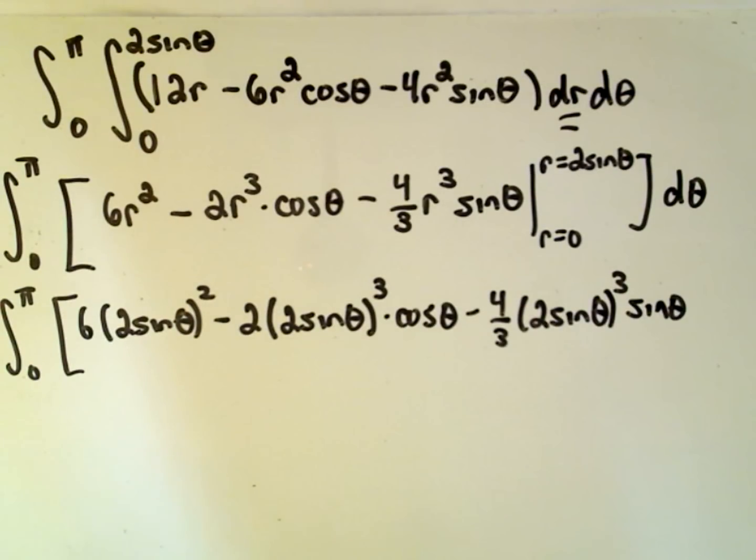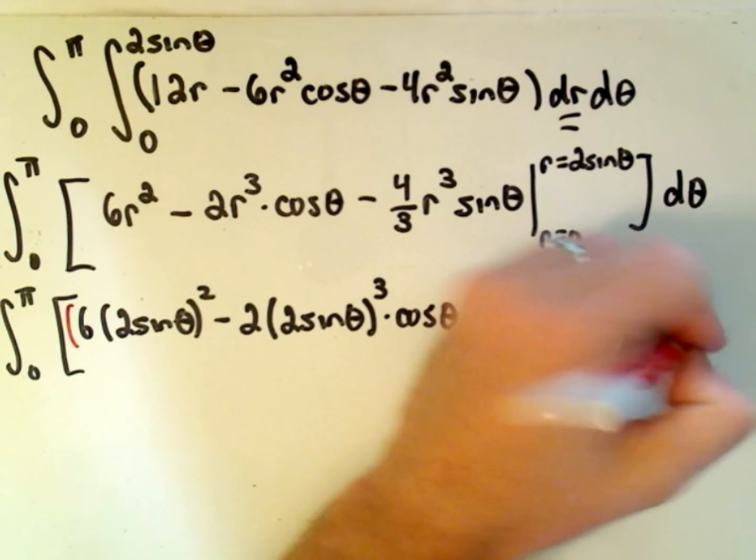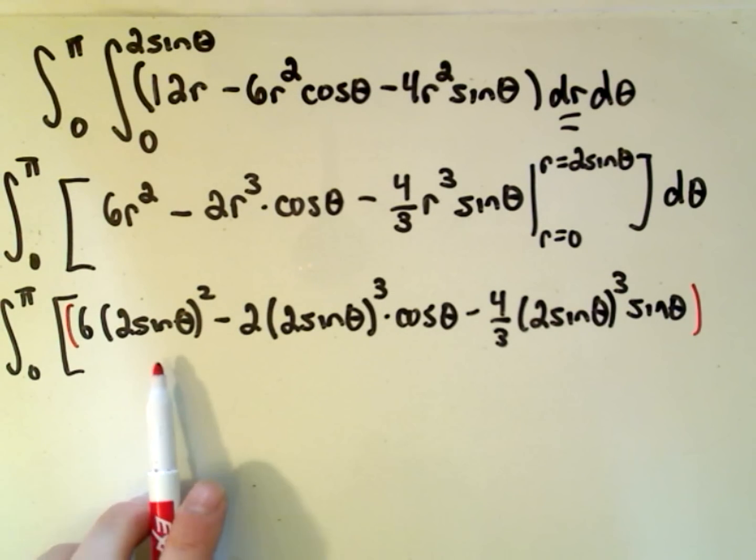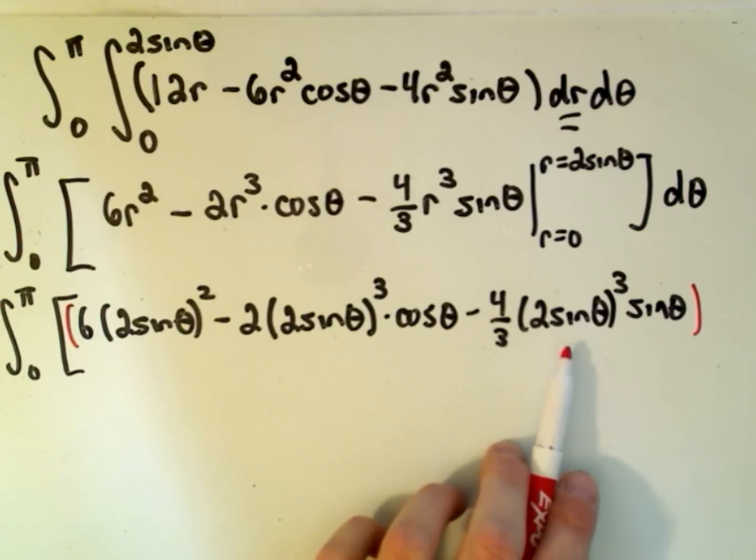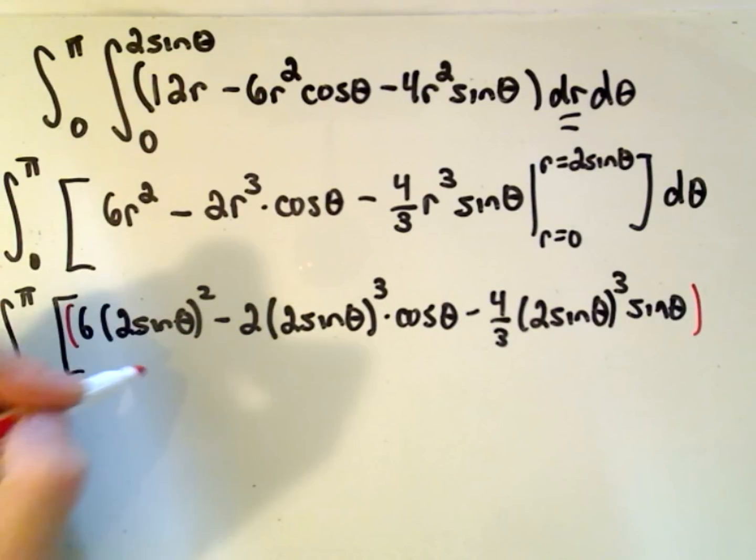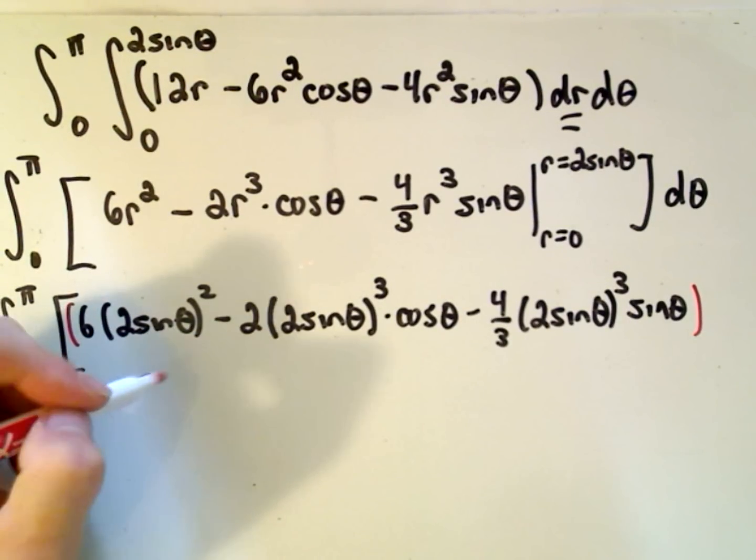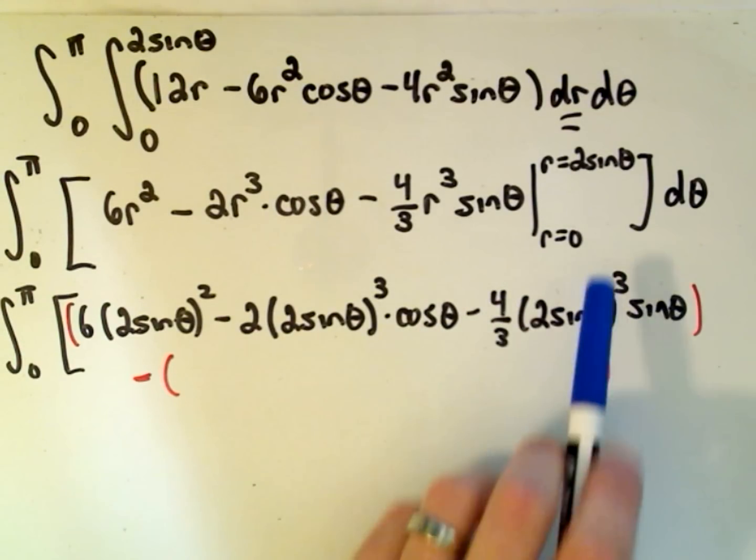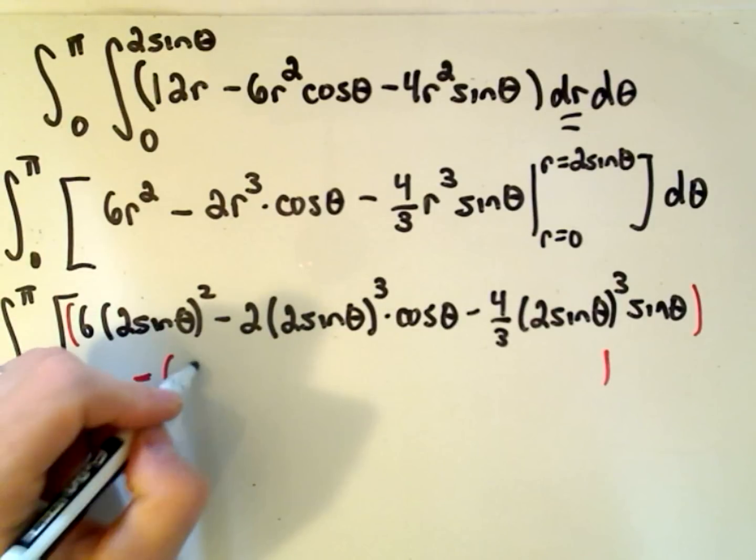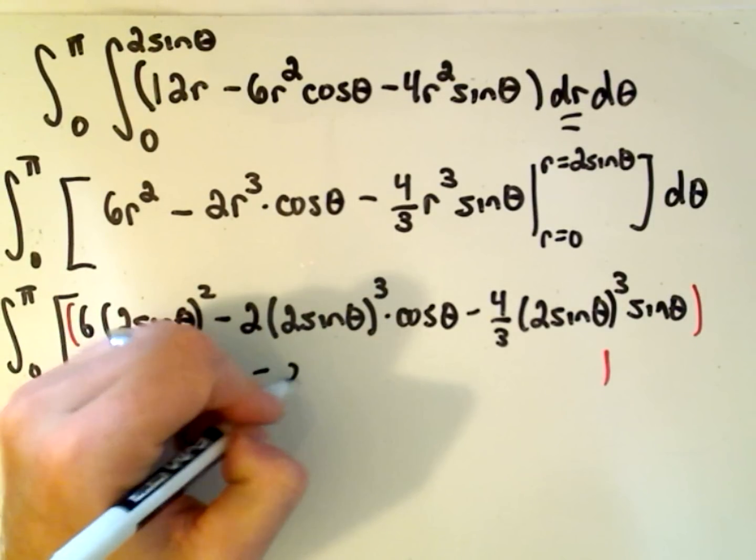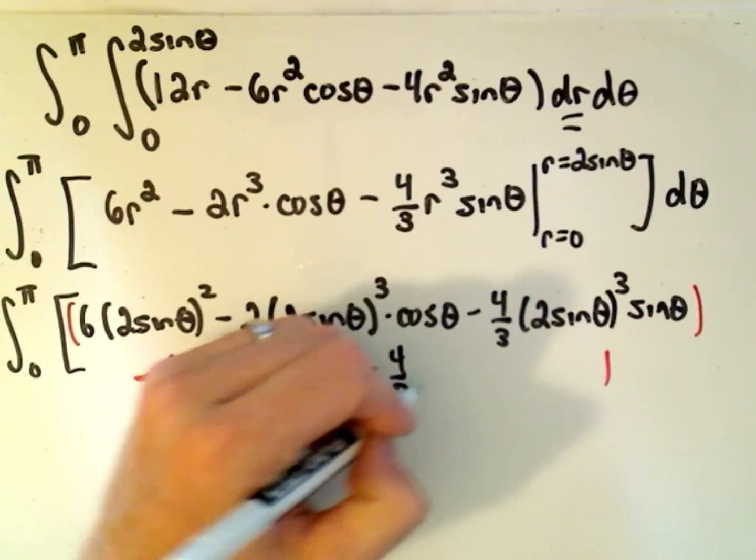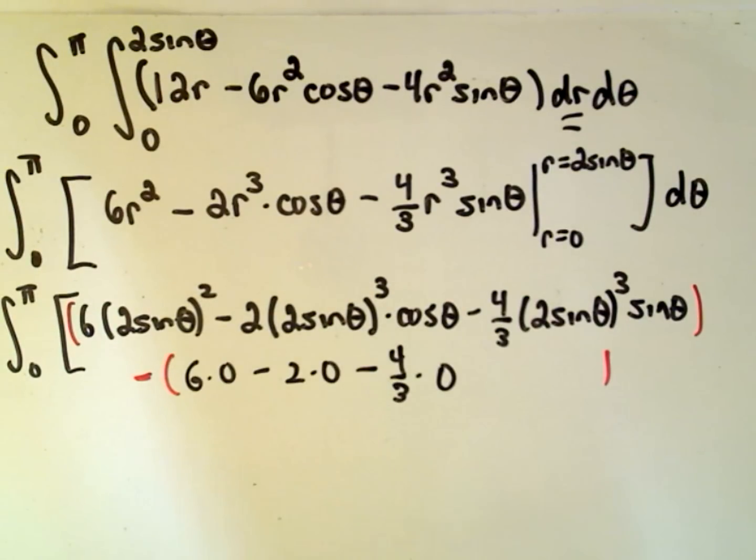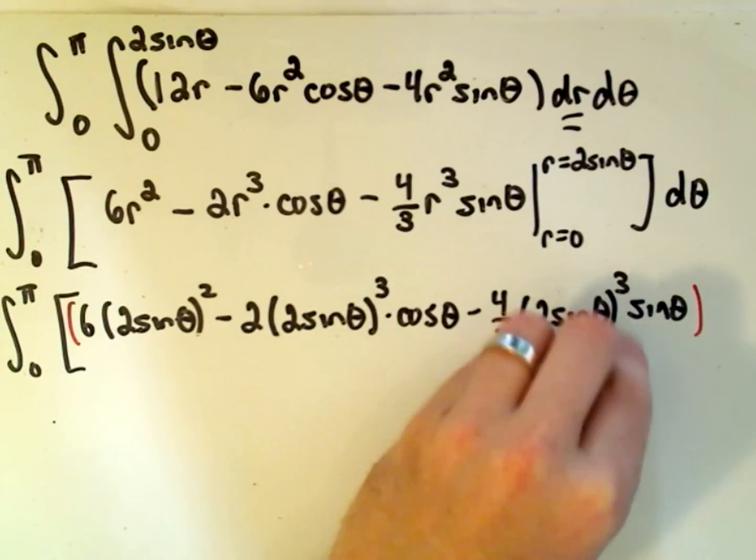So, from 0 to π, we'll get 6 times (2sinθ)² minus 2 times (2sinθ)³ times cosθ, and then we'll have minus 4/3 (2sinθ)³ times the original sinθ. Okay, so that's just the upper limit of integration. The good thing about the lower limit is we're plugging in zeros for r, so we would get 6 times 0, minus 2 times 0, minus 4/3 times 0, so the lower limit goes away.